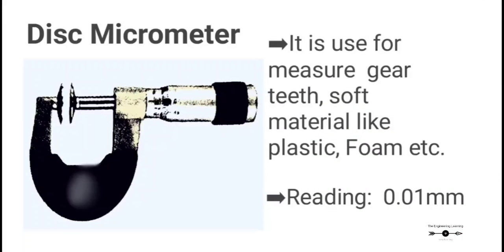Disc micrometer. It is used for measuring gear teeth, soft materials like plastic, foam, etc. The reading is 0.01 mm.